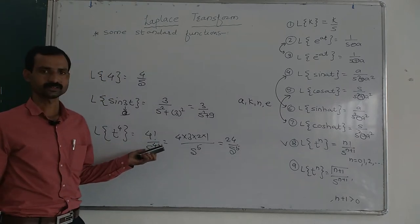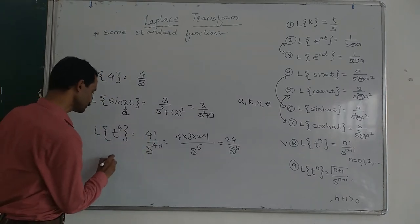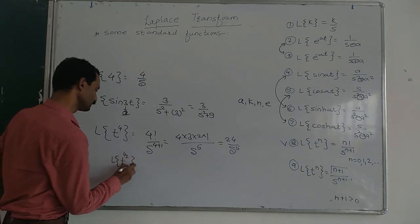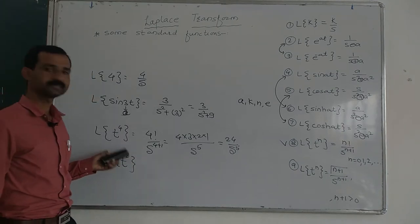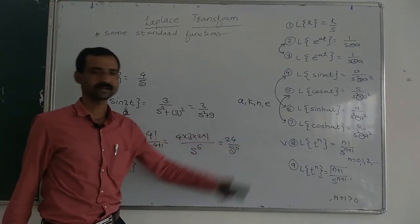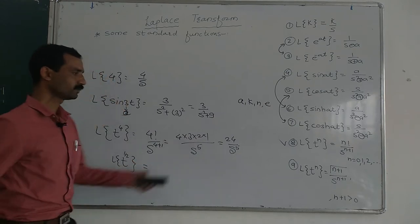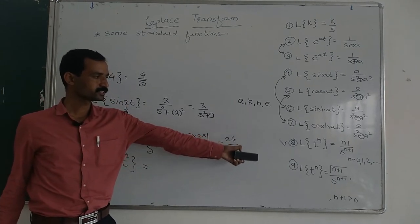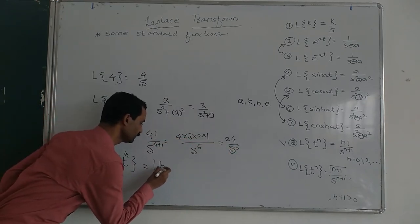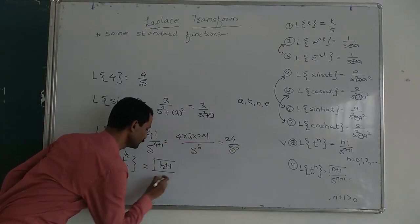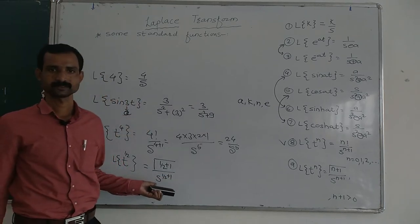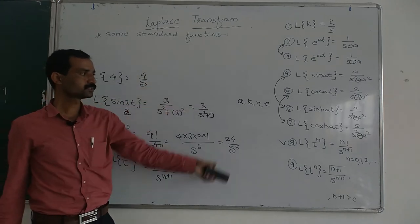If we want to find Laplace of t raised to 1/2, this is a fractional power, so we use formula number 9: Laplace of t raised to n is equal to gamma(n+1) upon s raised to n+1. So here n equals 1/2, giving gamma(1/2 + 1) upon s raised to (1/2 + 1), that is gamma(3/2) upon s raised to 3/2.